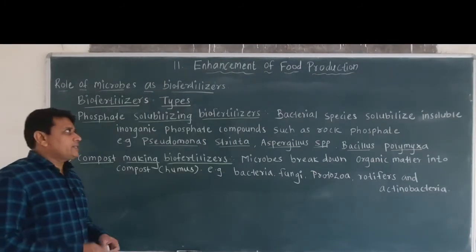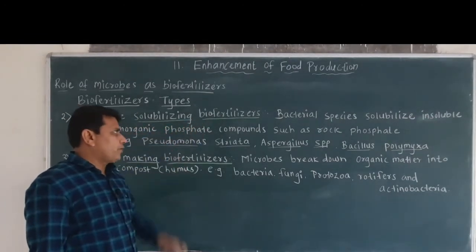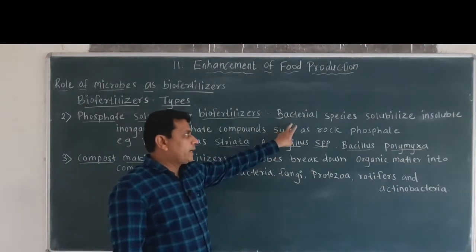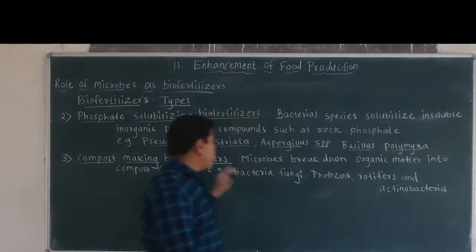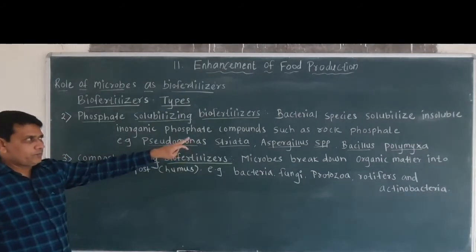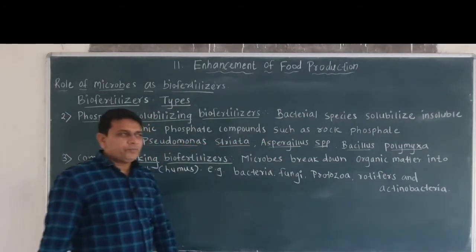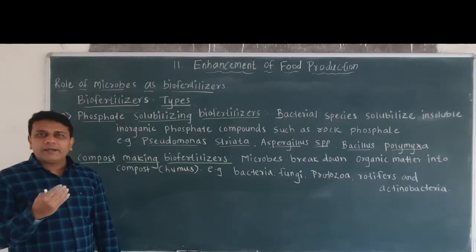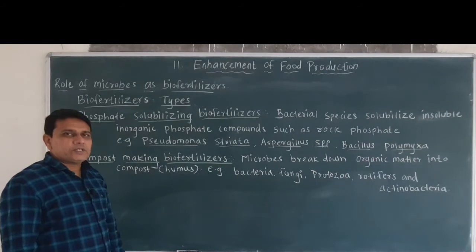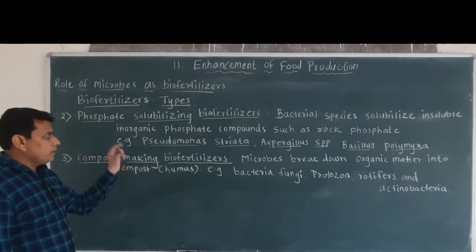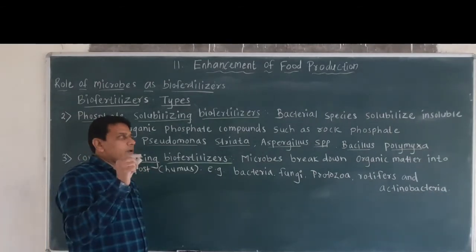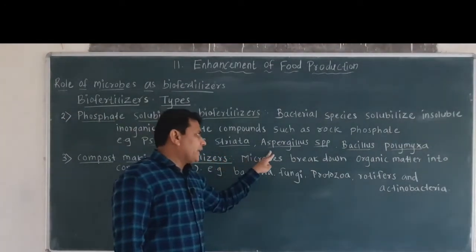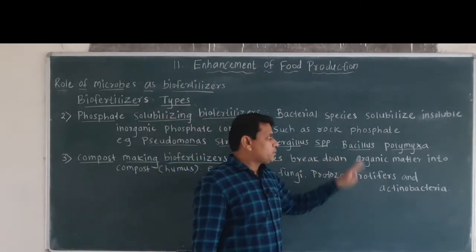The second type of biofertilizer is phosphate-solubilizing biofertilizers. These include certain bacterial species which solubilize insoluble inorganic phosphate compounds from rock phosphate. This phosphate is added to the soil and utilized by plants for their proper growth and development. The bacterial species involved in converting insoluble inorganic phosphate into soluble phosphate include Pseudomonas striata, Aspergillus species and Bacillus polymyxa.